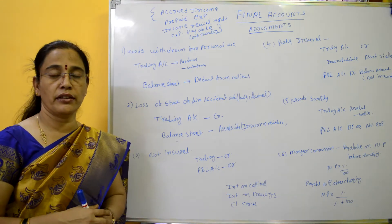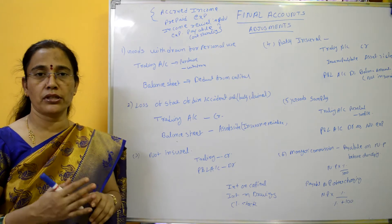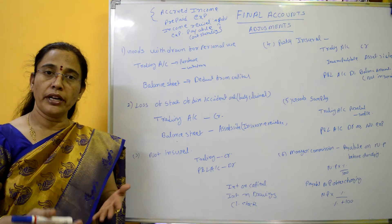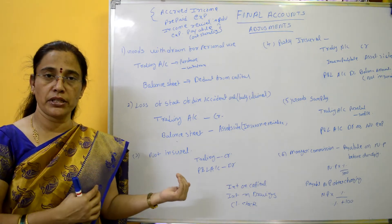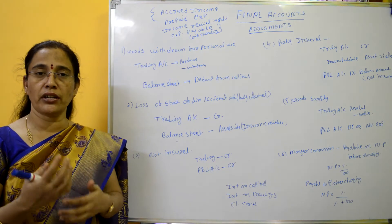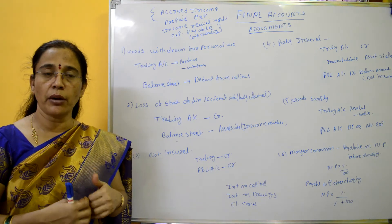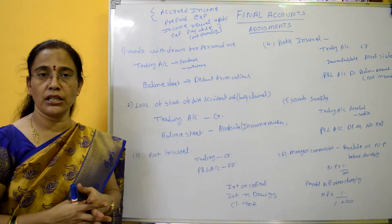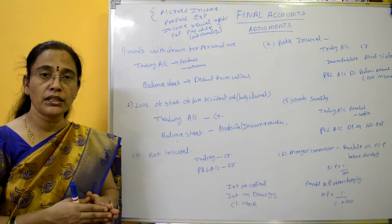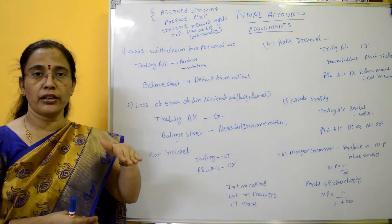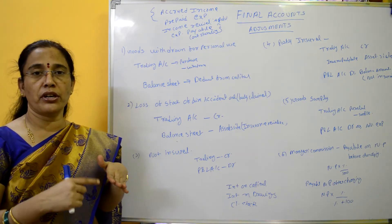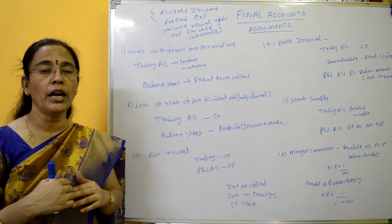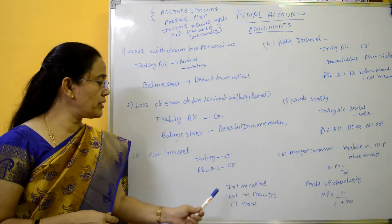Next is interest on drawings. The business organization owner makes drawings for personal use, so interest is charged on those drawings. Interest on drawings is treated as income — credit side of the profit and loss account — and it reduces the capital on the balance sheet.